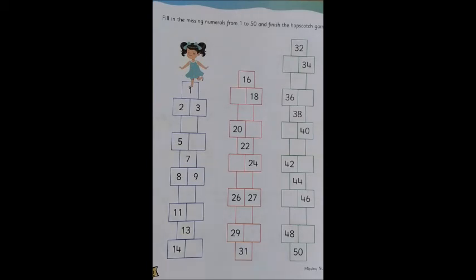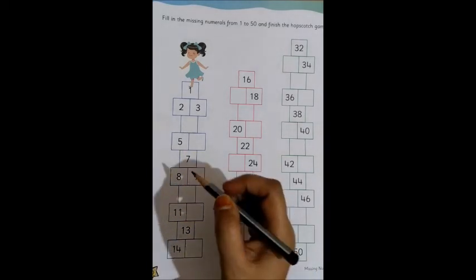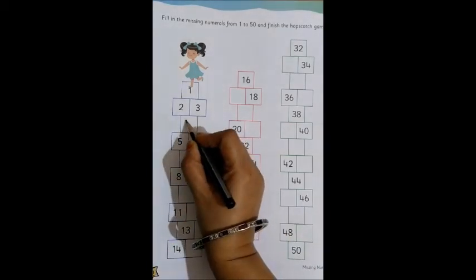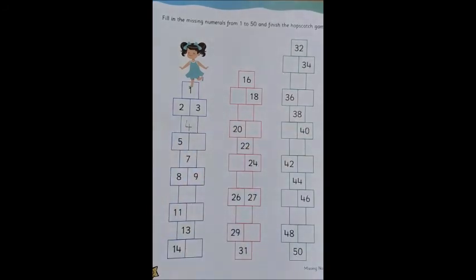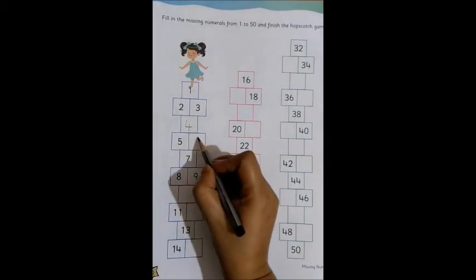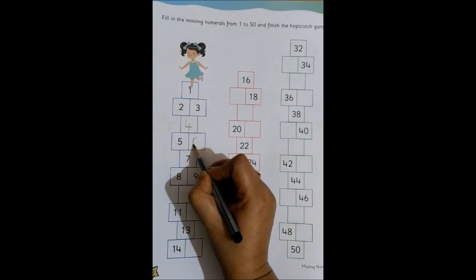Now, which next number is going to come after 3? 1, 2, 3 and the next number is 4. So, here in the box we write number 4. Moving on, after 5 which number comes? 6. Yes, so the next number after 5 we write is 6.